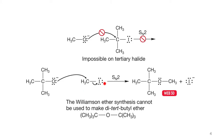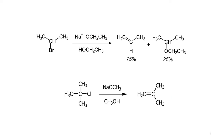On the other hand, if the substrate is unhindered, alkoxides can act as good nucleophiles. So if you want to make tert-butyl methyl ether, you have to use the tert-butyl alkoxide reacting with methyl iodide, because the methyl iodide is unhindered. You can't use the other combination — methoxide reacting with tert-butyl iodide — because the SN2 reaction won't occur. Similarly, you cannot make di-tert-butyl ether by Williamson ether synthesis because it won't undergo the SN2.